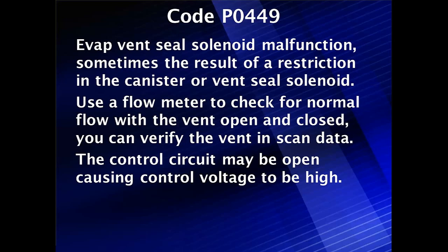Diagnostics for code P0449 is one of those combination problems. The basic code is the EVAP vent solenoid malfunction, not clearly stating it. What we found is sometimes it's a result of a restriction in the canister or the vent solenoid. We're going to use a flow meter to check for normal flow with the vent open and then close it to make sure it's working. The vent solenoid has two functions: one to open with little restriction to normal purge, then go into a specialized test mode to close and seal the system. We can verify this with a scan tool on a test drive. We also have a possibility the control circuit may be open, causing control voltage to be high. So we've got several things to check for.